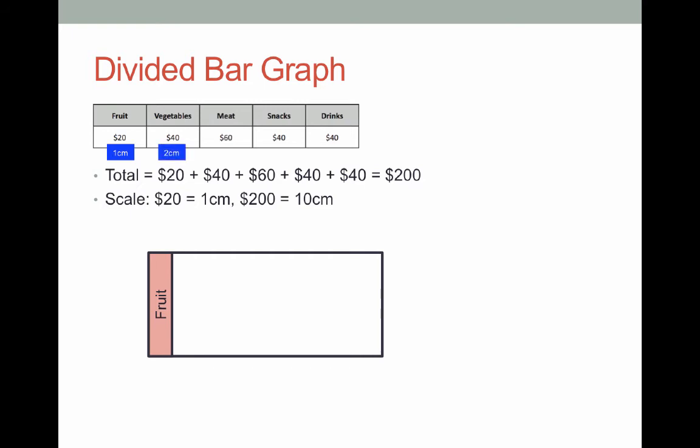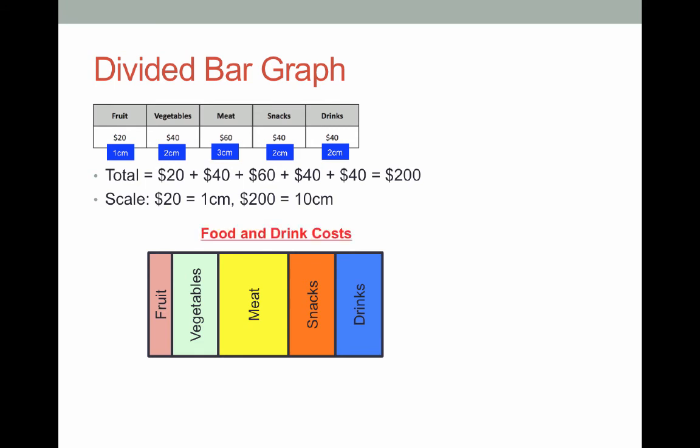My second section will be for vegetables which is going to be $40 and that means I need to have 2 centimeters on my divided bar graph and I write in vegetables inside it. Meat is $60 which is represented by 3 centimeters. Snacks is $40 represented by 2 centimeters and finally drinks is $40 represented by 2 centimeters and I have 2 centimeters left because I've done correct measuring. What I have to do now is make sure that I give myself a title, food and drink costs and I'm done.